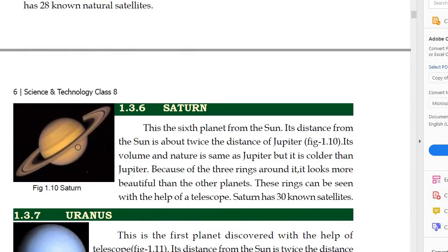As you can see, Saturn is the 6th planet from the sun. Its distance from the sun is about twice the distance of Jupiter. Because Jupiter is closer to the sun, it is hotter, so Saturn is colder. Saturn has 3 rings around it, which can be seen with the help of a telescope. Saturn has 30 known satellites.